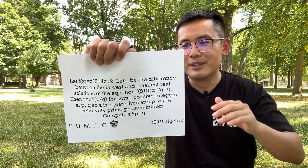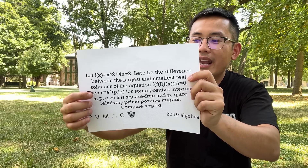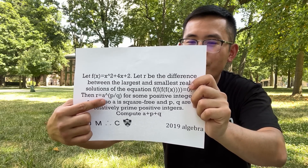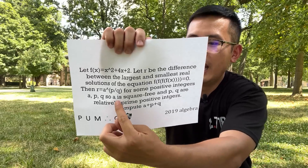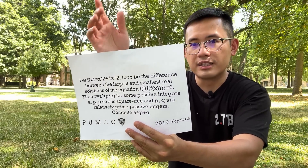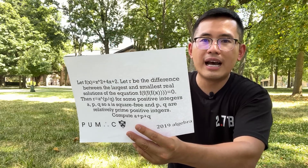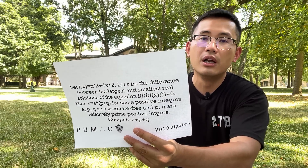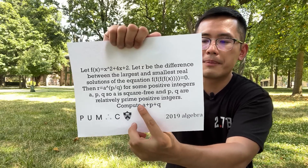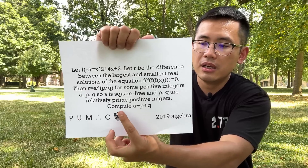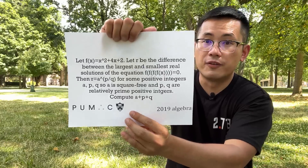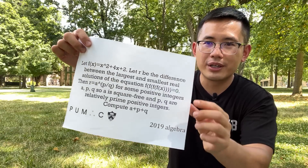We let r be the difference between the biggest and the smallest real solution of that equation. Once you find r, it will be in the form a to the power of p over q. Here, a is square-free, meaning it does not have any perfect square as a factor besides one — so 4, 9, 16, 25, etc. are not factors of a. And p and q are relatively prime. We are going to compute a plus p plus q. Go ahead and try this.